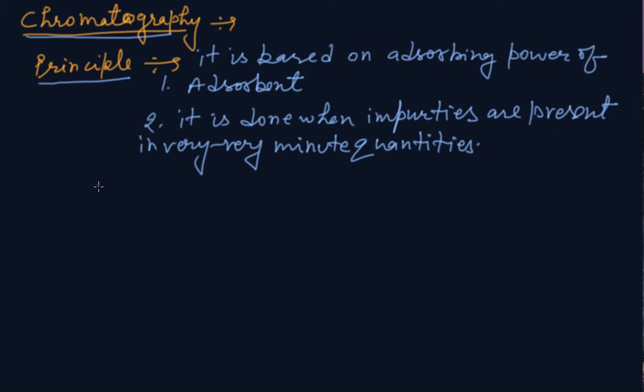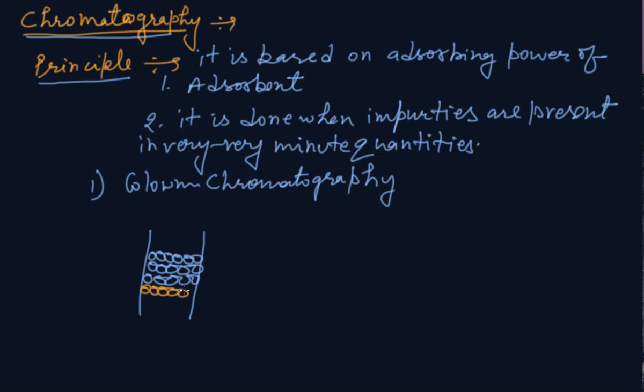In this portion we have in our syllabus column chromatography. In this way you can represent if we are having three adsorbents: A, B, C. These are three different solvents putting in test tube, making different columns.